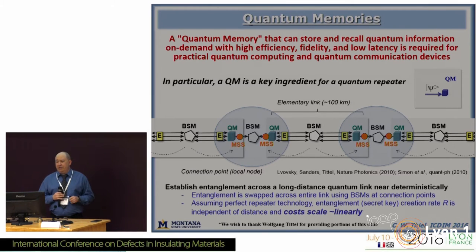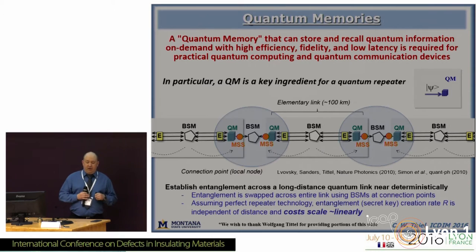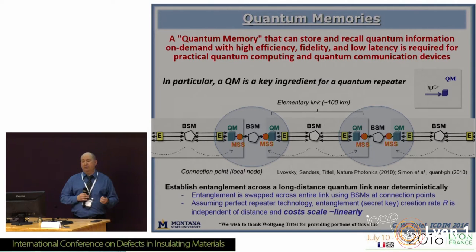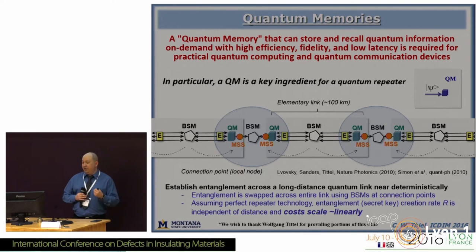To provide a more specific example of what's involved in a quantum communication system: here the rare earth material is being used as a quantum memory — essentially the equivalent of a classical computer's RAM — where you can take entangled photons, put them into the crystal, recall them at will later on, and preserve that entanglement. This is essential for use as a buffer memory for a quantum computer, or in the simplest case, in a quantum communication system, as a quantum memory to do entanglement swapping in something called a quantum repeater.